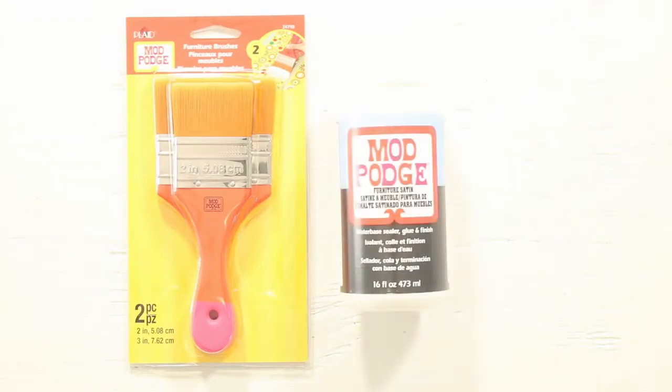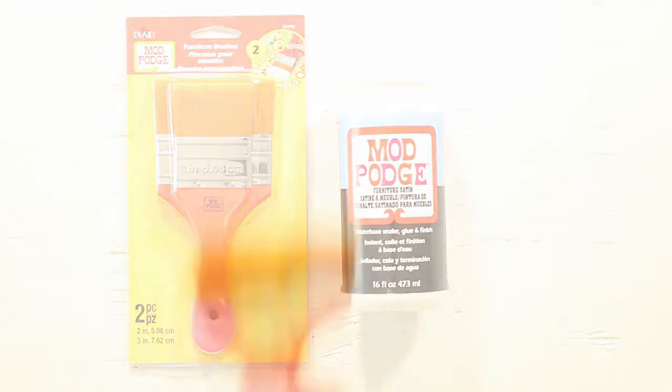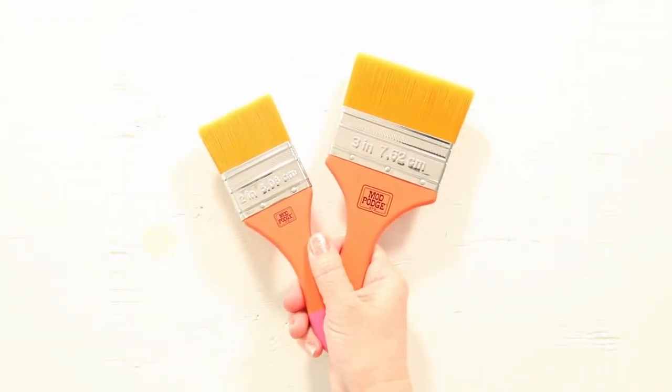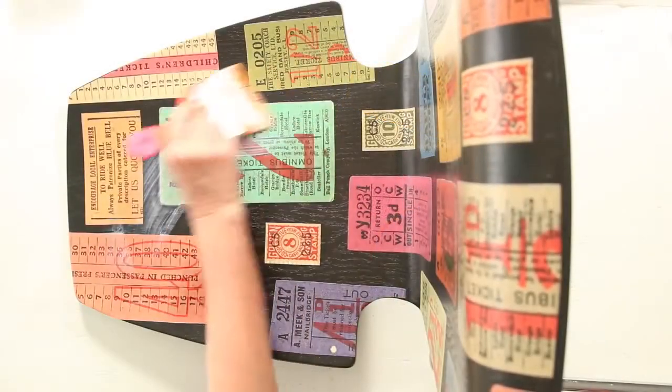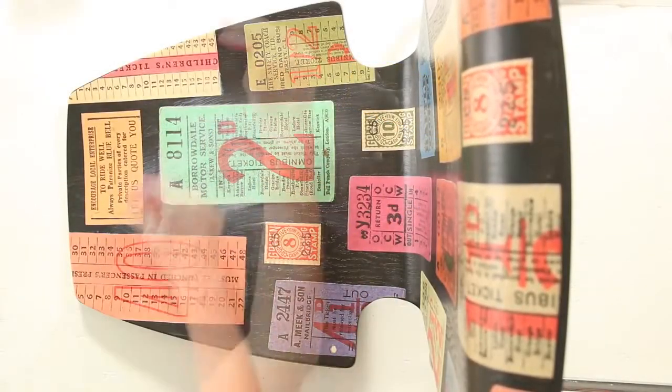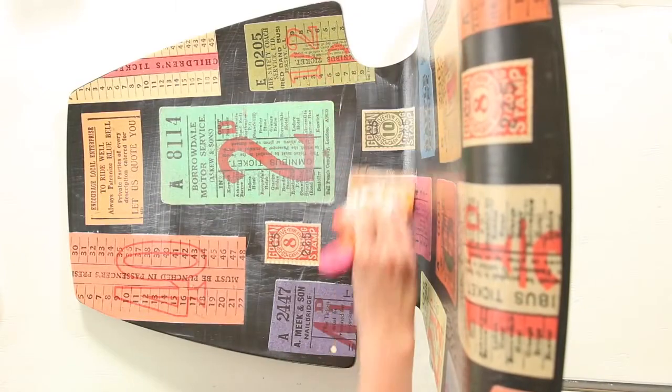The furniture brushes work great with Furniture Mod Podge. You get a 2 inch and a 3 inch brush. They have the same Taclon bristles. The long handles are perfect for working on furniture.